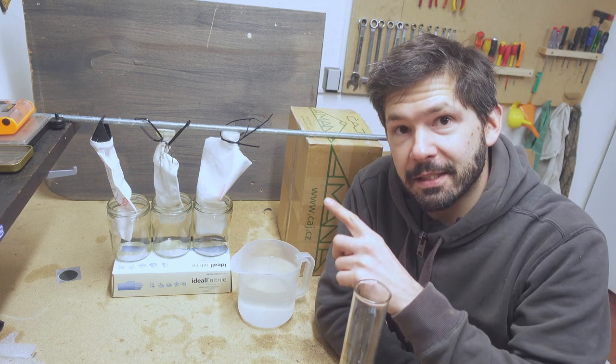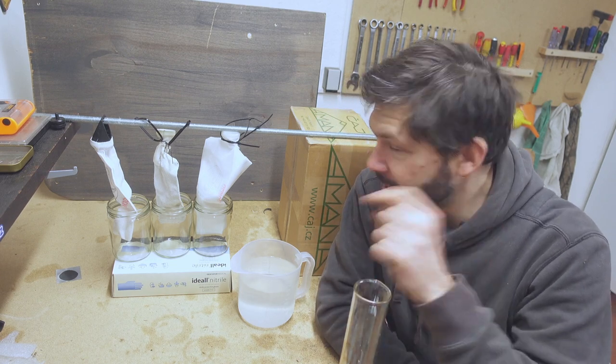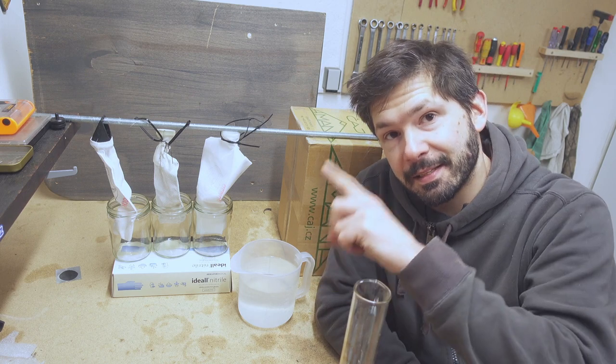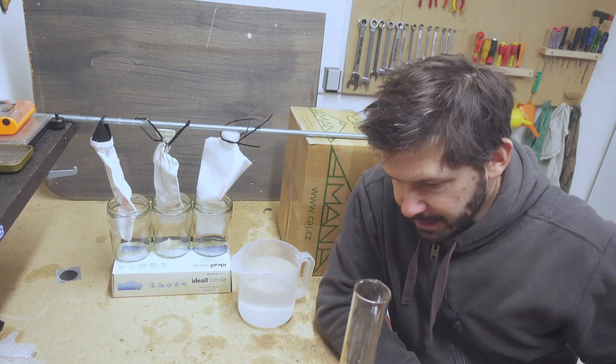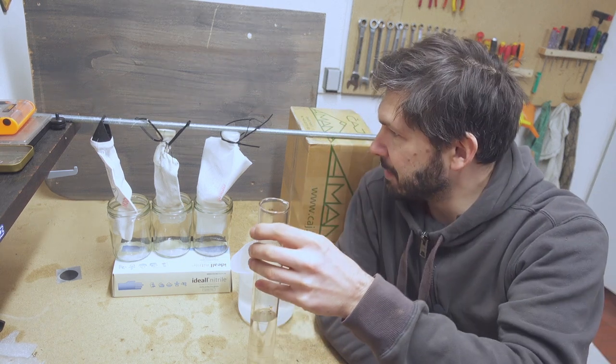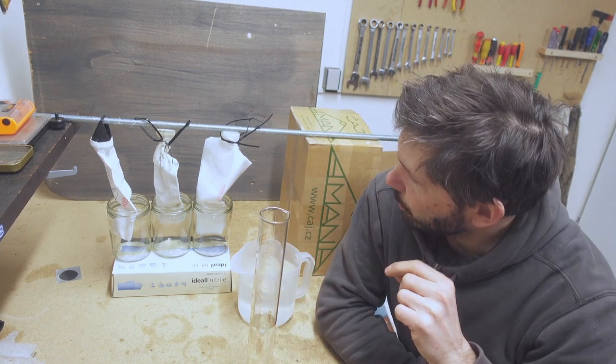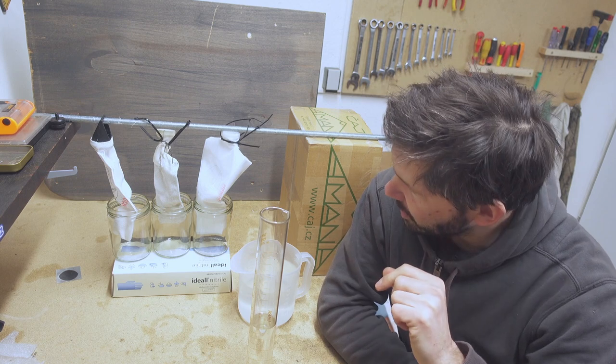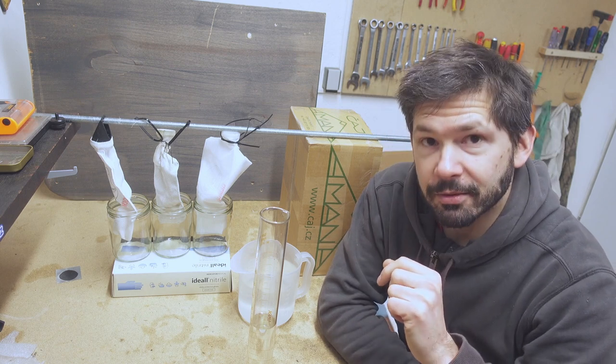Now these filters are supposed to keep dirt inside and separate fuel and the water. So what I'm going to do is I'm going to take 150 ml of the water, put it in each and see if something goes through it.